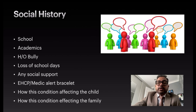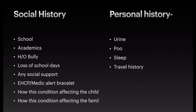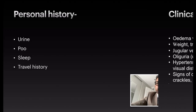Social history is very important — the hidden agenda often lies here. Always inquire about school, how academics are going, any history of bullying, loss of school days, social support, education healthcare plans, and how this condition is affecting the child and the family. Personal history should include questions about urine, bowel habits, sleep, and any history of travel.